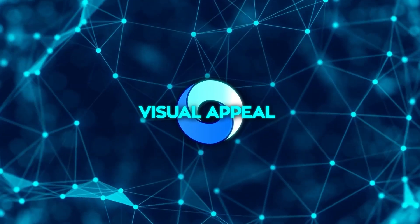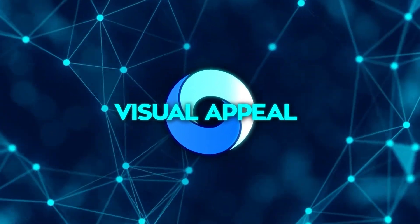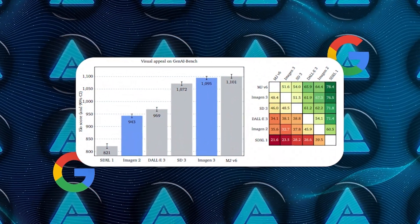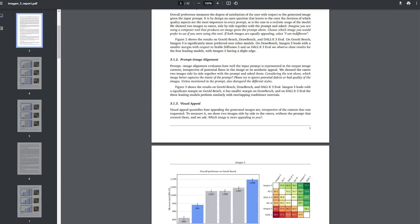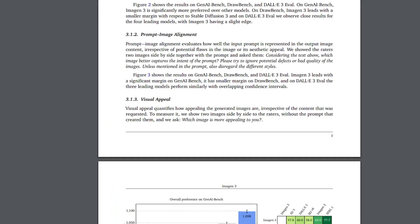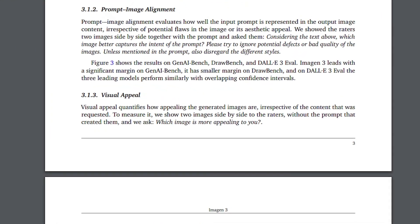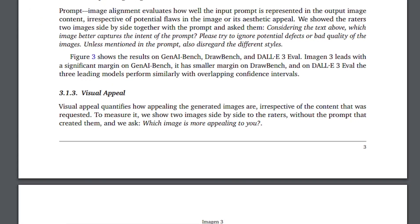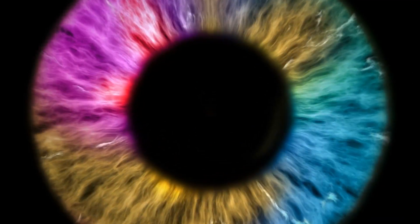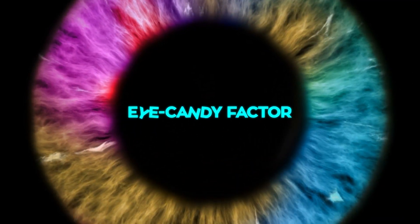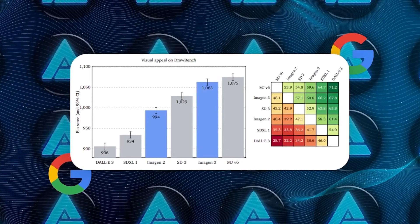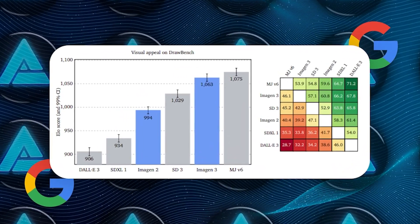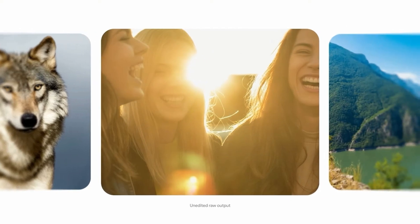Visual appeal is another area where Imagen 3 did well, though this is where Midjourney V6 actually edged it out slightly. Visual appeal is all about how good the image looks, regardless of whether it matches the prompt perfectly. So while Imagen 3 was close, if you're all about that eye-candy factor, Midjourney might still have a slight edge. But make no mistake, Imagen 3 is still right up there, and for a lot of people the difference might not even be noticeable.